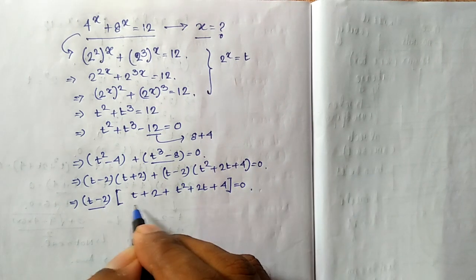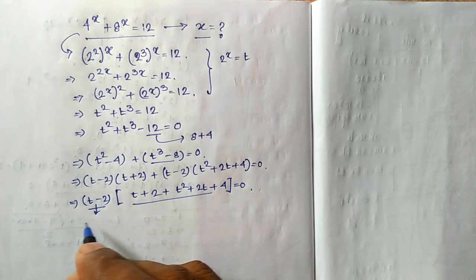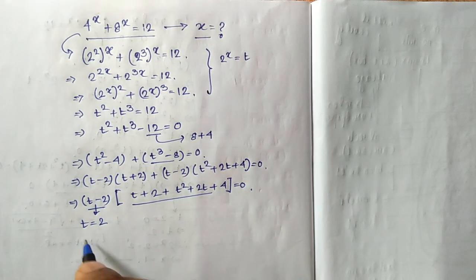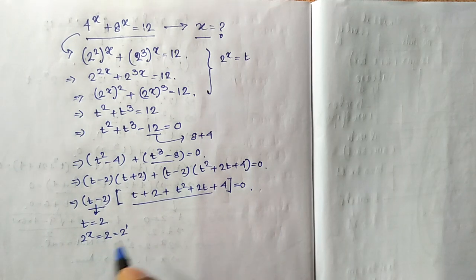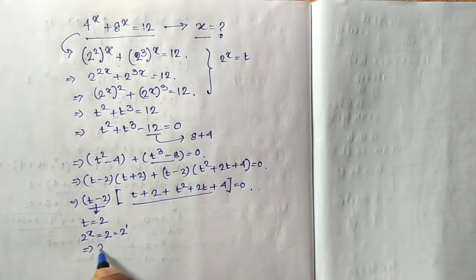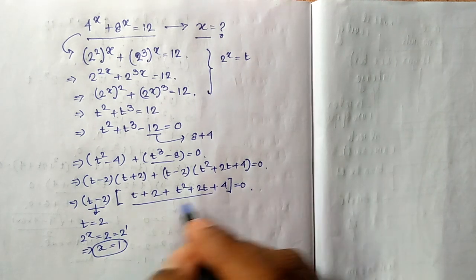Then either of these expressions should be 0 to make the product 0. If t minus 2 is 0, then t equal to 2, that means 2 to the power x equal to 2, that is 2 to the power 1, which implies that x equal to 1. That is the real solution of this particular equation.